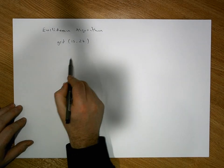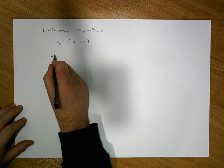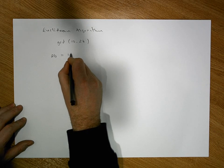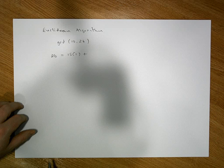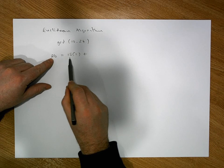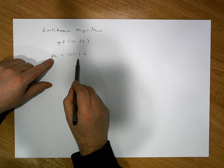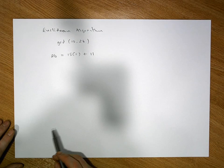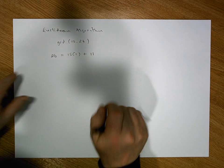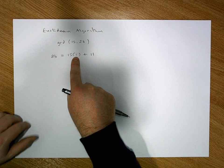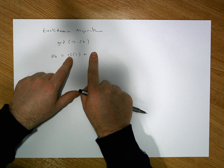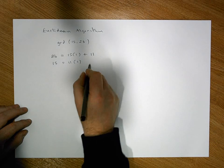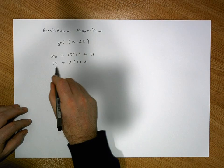Using the Euclidean algorithm, we take our largest number and ask how many times 15 divides into 26. It goes once, so 26 equals 15 times 1 plus a remainder. The remainder is 26 minus 15, which is 11. Next, we take 15 and 11: how many times does 11 divide into 15? It goes once, so 15 equals 11 times 1 plus a remainder of 4.